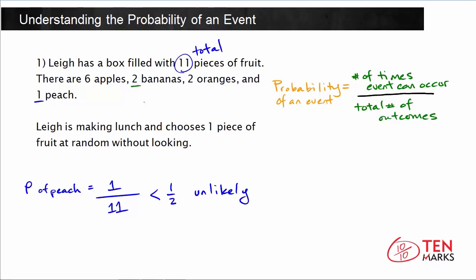There are 2 bananas, so the probability for this, P of banana, would be the number of times that you could choose a banana, which is 2, divided by the total number of outcomes, which is 11. Two-elevenths is less than one-half, so this event is still pretty unlikely.